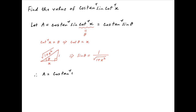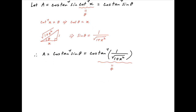Therefore a, which is equal to cos of tan inverse of sine theta, is equal to cos of tan inverse of 1 upon square root of 1 plus x squared. Now let tan inverse of 1 upon square root of 1 plus x squared be equal to phi. Therefore a is equal to cos of phi. Since phi is equal to tan inverse of 1 upon square root of 1 plus x squared, therefore tan phi is equal to 1 upon square root of 1 plus x squared.